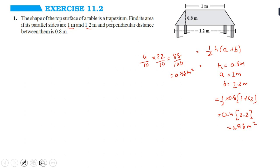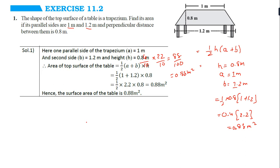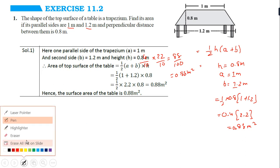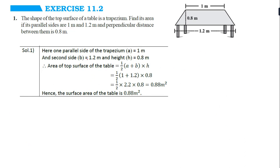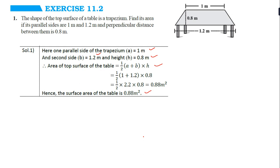Now let me show how you have to write this in your textbook. First write: parallel sides — 1 meter and 1.2 meter. Height — 0.8 meter. Write the formula for the area of the top surface, put in the values, and you will get the correct answer. That is how you have to write all 8 sums related to Exercise 11.2.